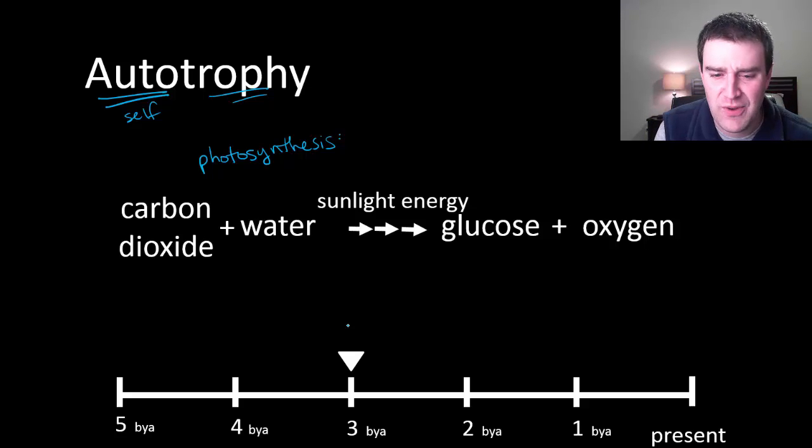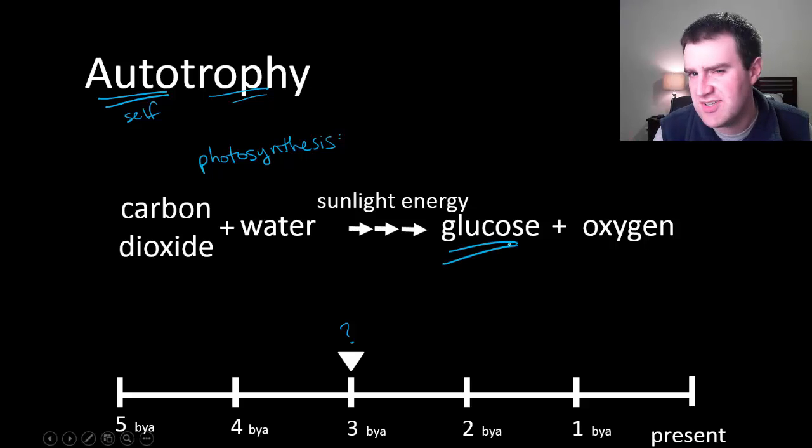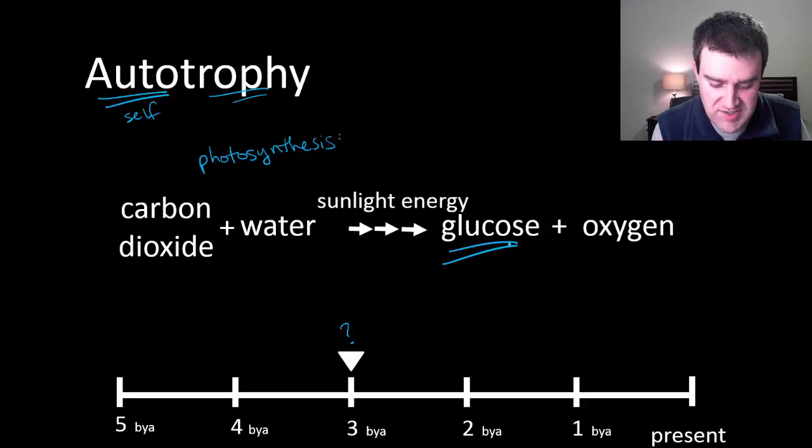But certainly photosynthesis is a really important innovation that occurred at some point early in history too. We don't know exactly when, so I'm just giving you a ballpark estimate here. But again, the ability to make your own food really got food chains started because at the base of any food chain are organisms that can make their own food, and then other organisms who specialized in eating them could come about later.